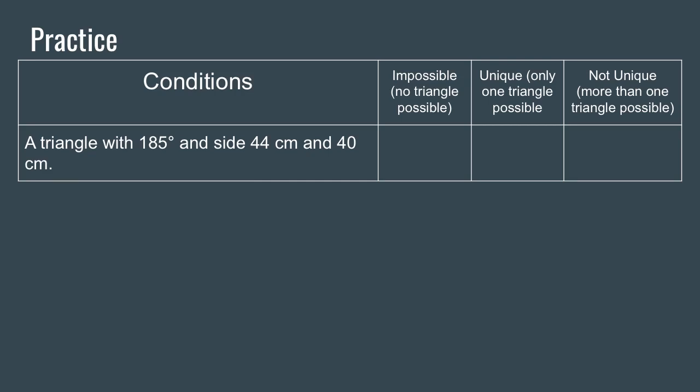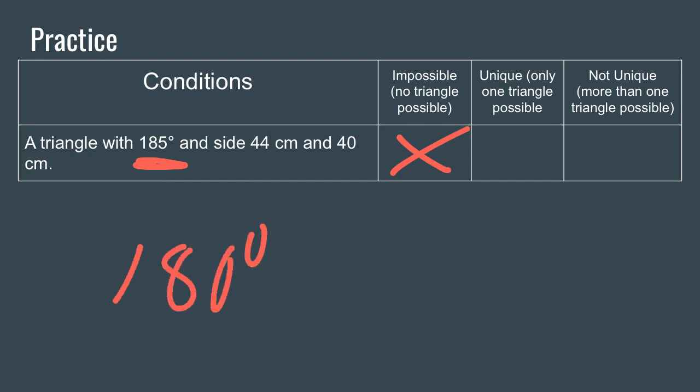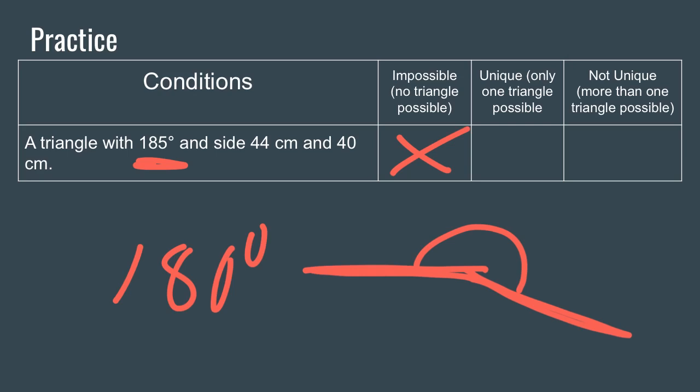Another one: a triangle with 185 degrees and sides of 44 and 40 centimeters. I don't even need to look at the sides — this is impossible. You cannot have an angle of 185 degrees in a triangle; a triangle's angles must add up to 180. An angle of 185 degrees would go beyond a straight line, so this triangle is impossible.